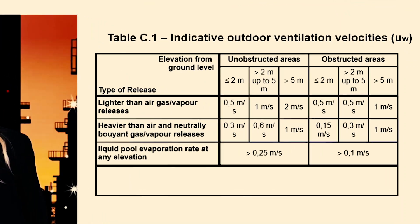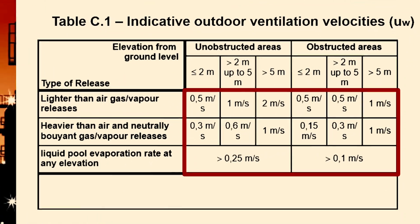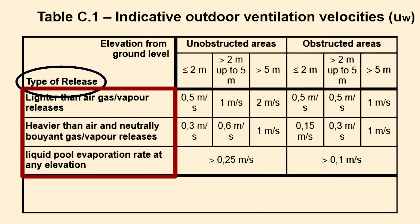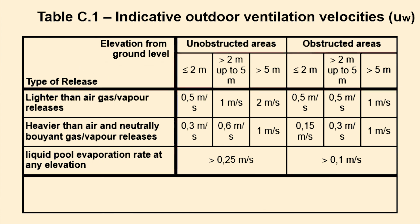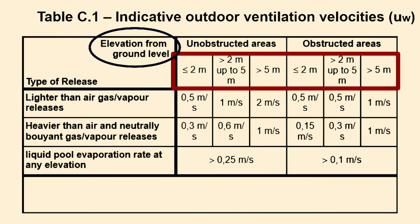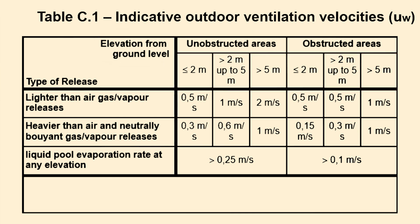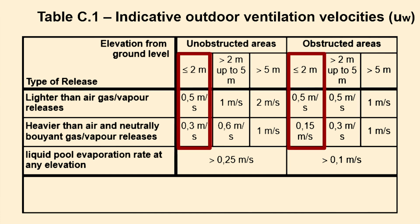Table C.1 provides ventilation velocities that may be used for analysis based on the relative density of the flammable material, the release location, elevation, and if the release is in an obstructed or unobstructed area. In general, ventilation velocities will be highest in unobstructed locations at high elevation. The closer to grade a release occurs, the less wind velocity we would expect.